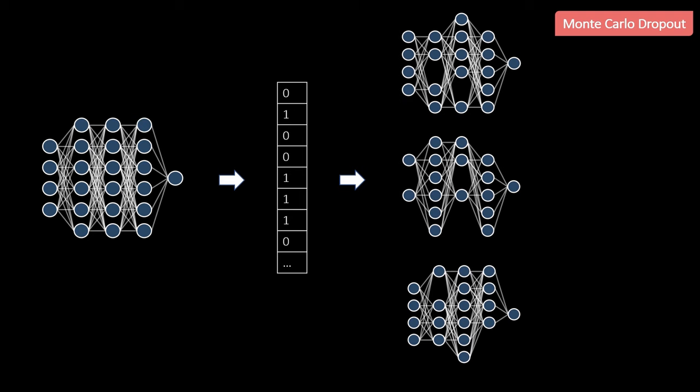Dropout is a technique that randomly drops out units from the network. This can be done by sampling a random binary mask that is applied in each layer. The results are several subnetworks of the original network. Usually we use dropout during training to avoid overfitting and turn it off at prediction time because we want to use all information that's available. The trick with Monte Carlo dropout is now that we also apply random dropouts at prediction time and sample several forward iterations for an input.